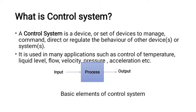Some applications of control systems include control of temperature, liquid level, flow, velocity, pressure, and acceleration. For example, if you want a room temperature of 25 degrees Celsius but the room is at 30 degrees Celsius, you need to reduce it by 5 degrees. A control system maintains that 25 degrees Celsius throughout the day. These are examples of control systems.